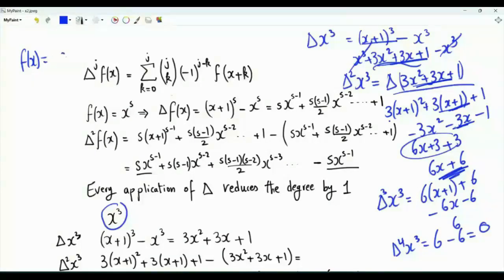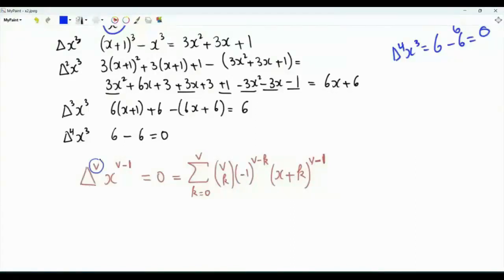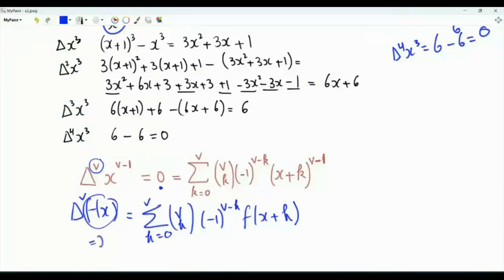More generally, if f of x is a polynomial of degree m with leading coefficient a_m, the difference operator cancels the leading term x to the m. From the general formula, applying delta v times to the function f of x equals summation k from 0 to v of v choose k, times minus 1 to the power v minus k, times f of x plus k. If f of x equals x to the power v minus 1, then f of x plus k becomes x plus k to the power v minus 1, and this identity holds for every v greater than or equal to 1.